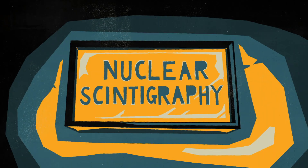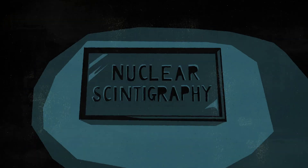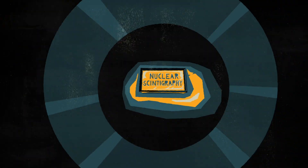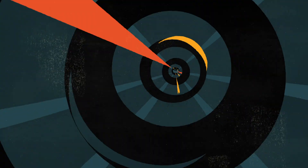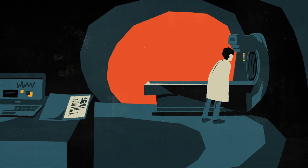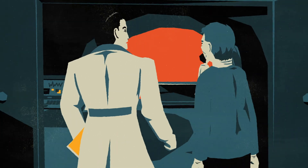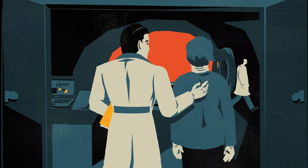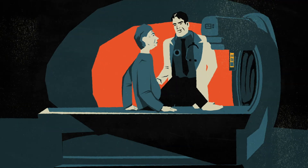We utilized a nuclear scintigraphy cardiac imaging protocol to evaluate Ted. This protocol uses a radio tracer to detect amyloid deposits in the heart. There are three radio tracers that can be used: 99M technetium labeled 3,3-diphosphono-1,2-propanodicarboxylic acid, 99M-TC-DPD;